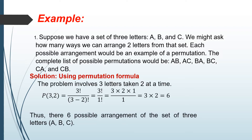So using the permutation formula, the problem involves three letters taken two at a time. So P(3, 2) equals 3 factorial over (3 minus 2) factorial, which equals 3 factorial over 1 factorial. Simplifying, we have 3 times 2 times 1 over 1, which equals 3 times 2, which equals 6.